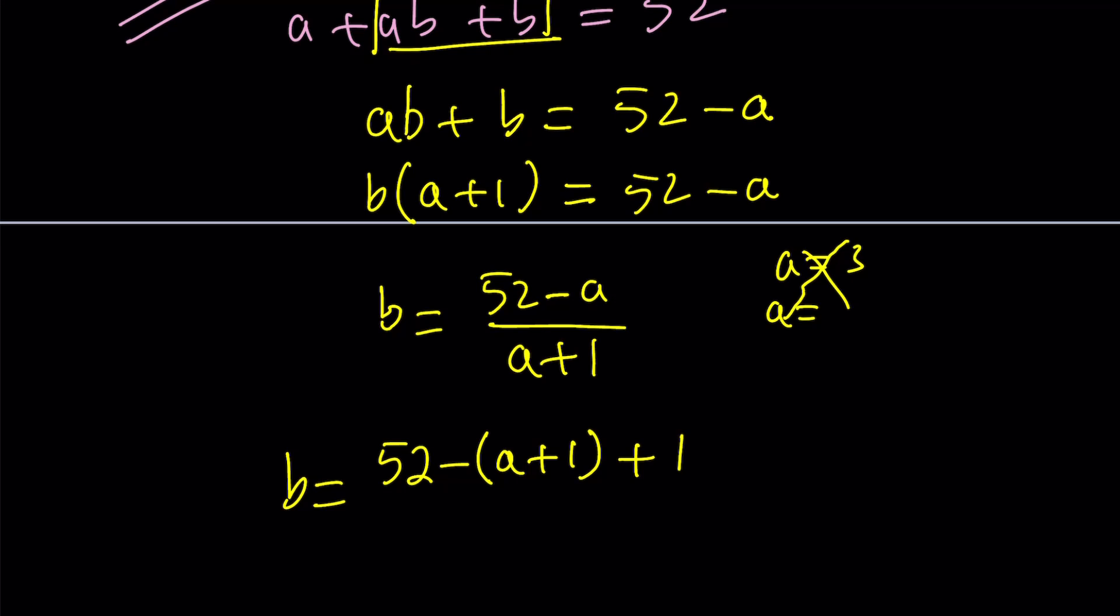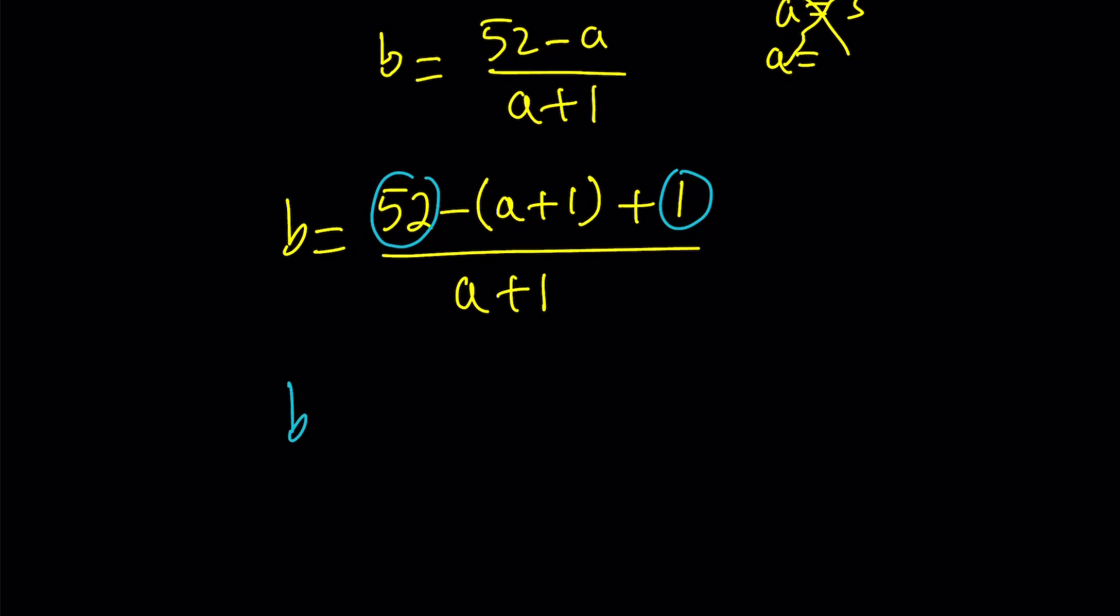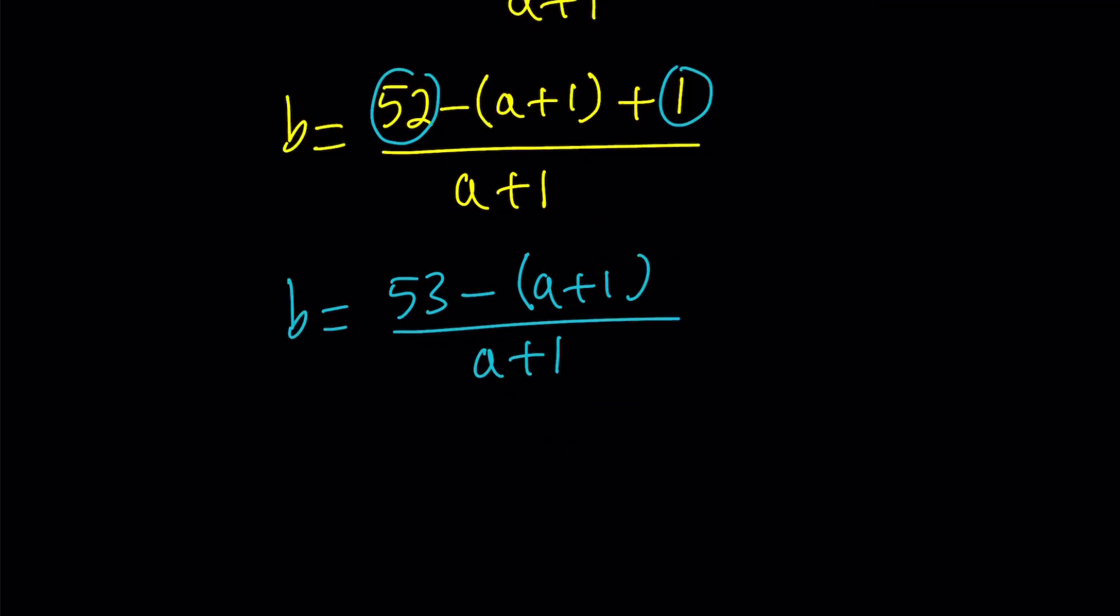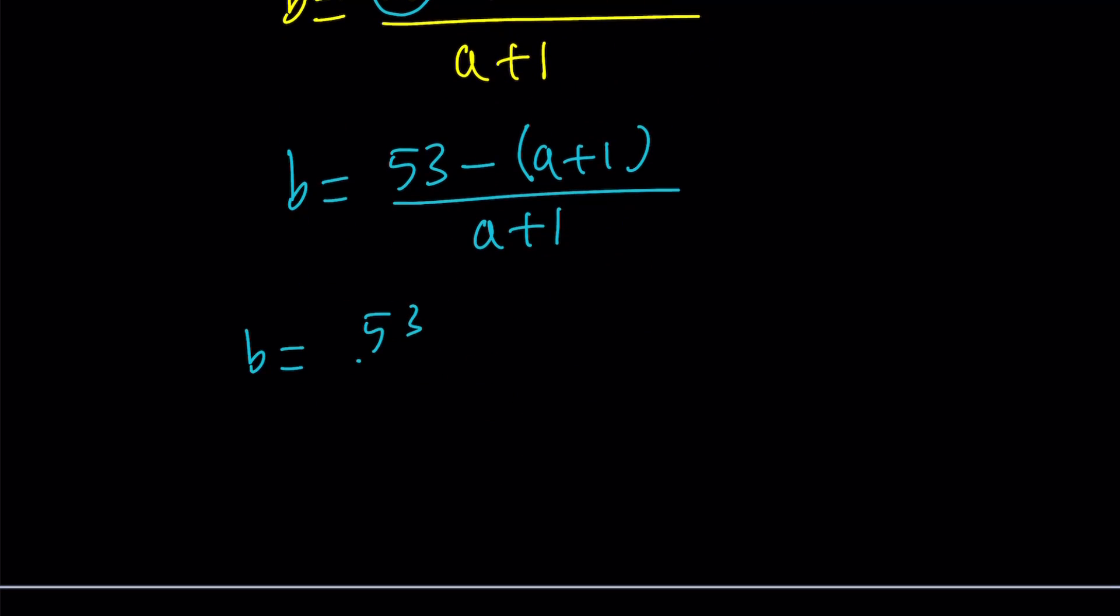And now we're going to combine these two numbers. 52 plus 1 is 53, so that's going to give me b equals 53 minus the quantity a plus 1. It's important to keep that in parentheses all the time. And then we're going to go ahead and split this up. 53 divided by a plus 1 minus a plus 1 divided by a plus 1. But that's equal to 1, so let's just go ahead and replace it with 1. And we're pretty much done. Well, not yet, but at least we brought this problem to a manageable, easily manageable form.